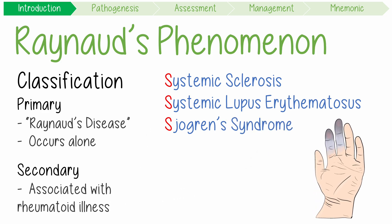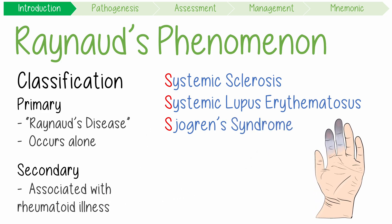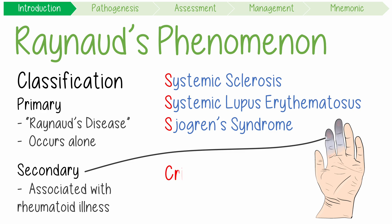An important distinction to remember is that secondary Raynaud's can cause a digit-threatening medical emergency called critical digital ischemia, while primary RP does not.